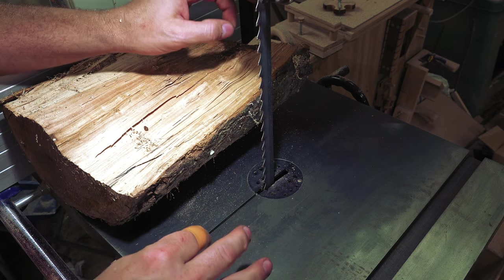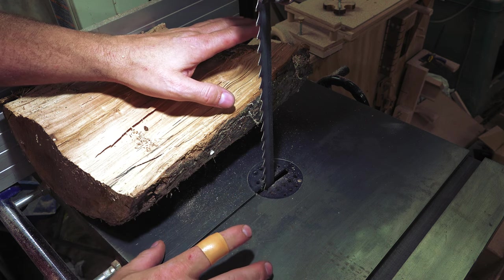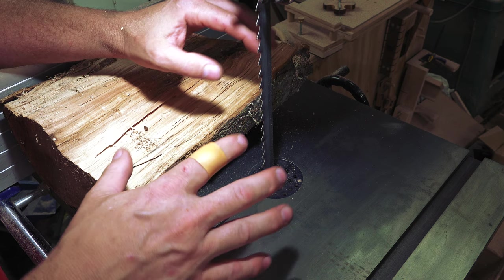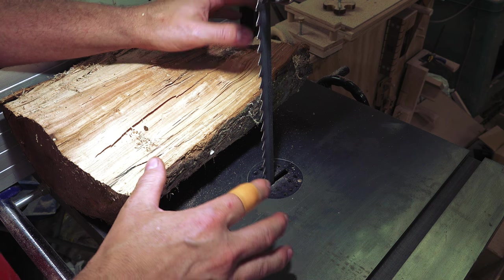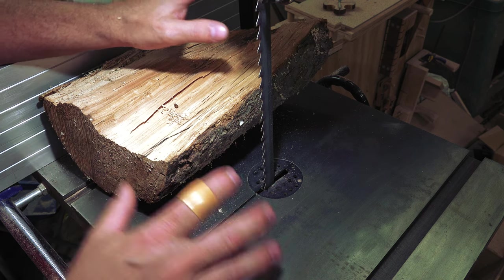Of all the machines in the shop, I think the bandsaw has the most hidden dangers. Because these are such easy machines to use, you don't expect there to be a lot of kickback and other problems. But these machines become ferocious if you don't use them properly.